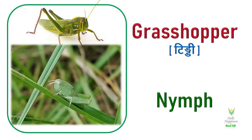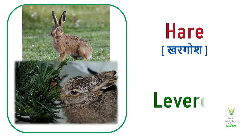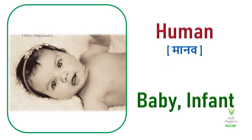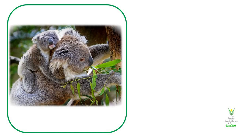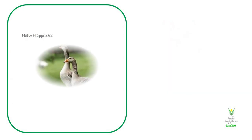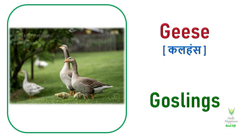Grasshopper. Grasshopper's young one is called a Nymph. Hare. Hare's young one is called a Leveret. Human. Human's young one is called a Baby or Infant. Koala. Koala's young one is called a Joey. Geese. Geese's young one is called Goslings.